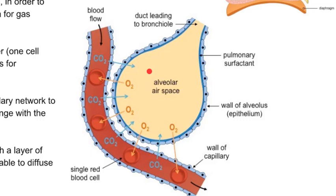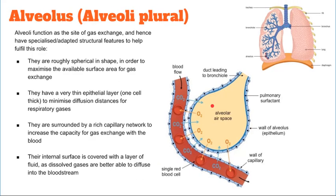The alveoli are covered with a dense network of capillaries that have low oxygen and high carbon dioxide. Because of this diffusion gradient, oxygen diffuses into the blood and carbon dioxide diffuses out. Special cells in the alveolar walls secrete a fluid that keeps the inner surface of the alveoli moist, allowing gases to dissolve. This fluid contains a natural detergent — a surfactant — that also prevents the sides of the alveoli from sticking together, creating a moist layer and increasing effective surface area for gas exchange.